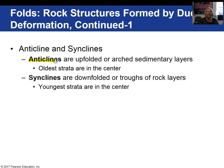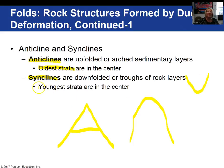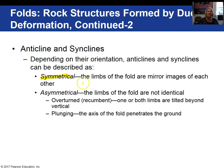There are two main types of folds. Anticlines are upfolded — they look like an A — and the oldest rock layers are in the center. Synclines are downwarped or downfolded, and the youngest rocks are in the center. Anticlines and synclines can be symmetrical, with limbs on either side of the axis at the same angle, or asymmetrical, where the limbs dip at different angles. We can also get recumbent and overturned folds. If the fold is diving into the earth at an angle, we call that a plunging fold.